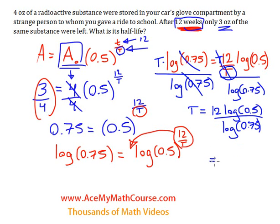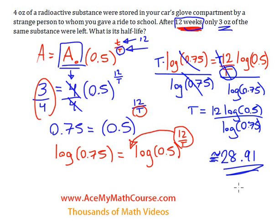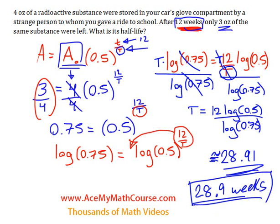Now I can plug this into the calculator: 12 times the log of one half over the log of three quarters. And I get 28.91 as the answer — approximately 28.91. So the half-life of the substance is around 28.9 weeks. And that's it.